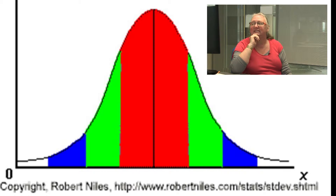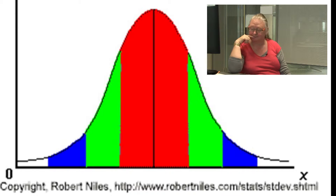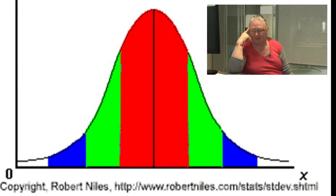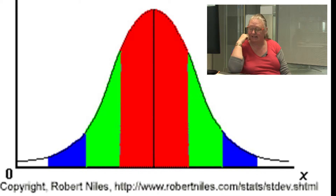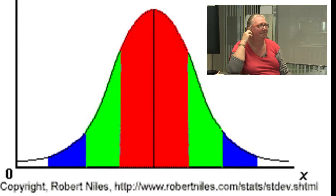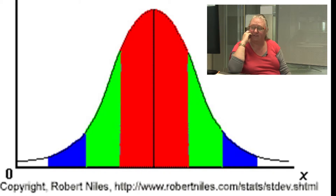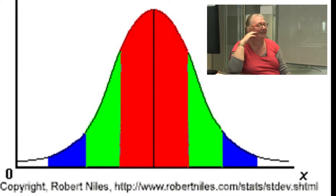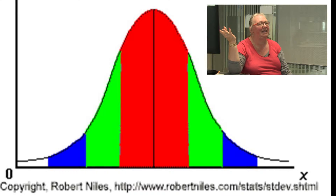One standard deviation away from the mean in either direction — on this slide, that's the red areas — accounts for about 68% of the population. Two standard deviations away, the red and green areas, captures about 95% of people under that curve. And all of the coloured areas — blue, green, and red — accounts for about 99% of the population. This is pretty standard for virtually any group of measurements.